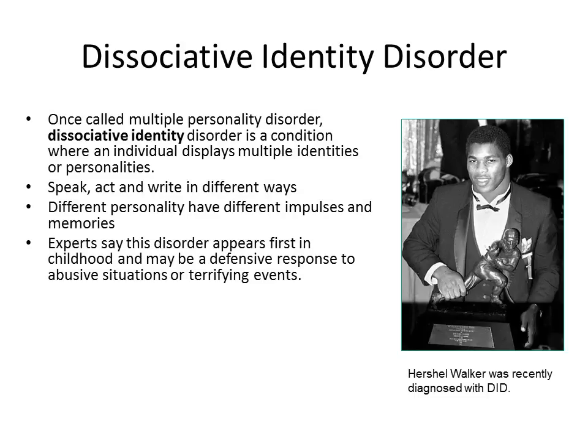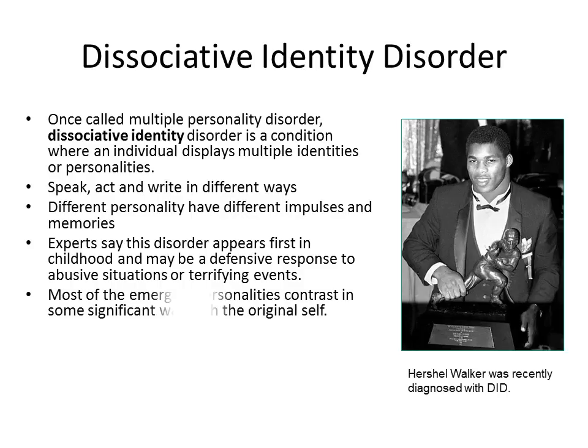Dissociative identity disorder was once called multiple personality disorder. It's where you speak, act, and write in several different ways — you can have several different personalities. Experts say the disorder appears first in childhood and may be a defensive response to an abusive situation or terrifying event. You may have been abused as a child and create an alternate personality to manage those thoughts. Most emerging personalities contrast significantly with the original self — one might be very calm while another is very anxious.